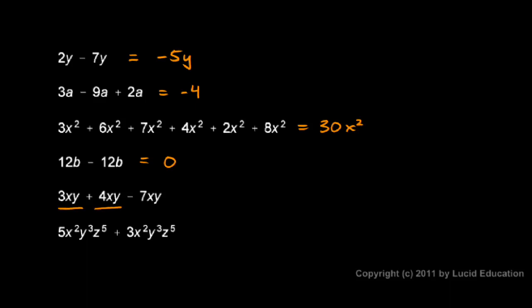Here, 3xy plus 4xy, that gives me 7xy minus 7xy. So again, I end up with 0. 7xy minus 7xy leaves me with 0.